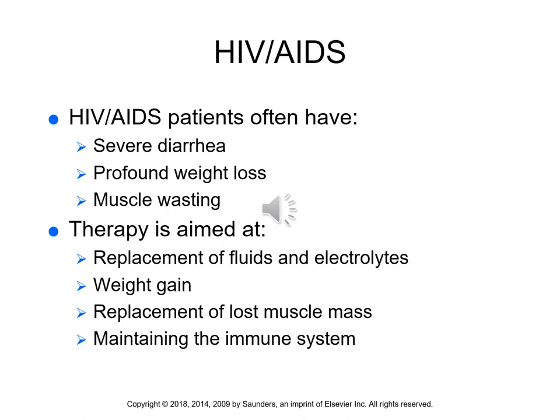HIV patients often experience loss of appetite, nausea, vomiting, severe diarrhea, severe weight loss, and muscle wasting, which can interfere with diet therapy. The goals of dietary therapy include replacement of fluids and electrolytes, weight gain, and replacing lost muscle mass. Research suggests that proper diet therapy may help delay full-blown AIDS. Gastric tube feedings or TPN may also be required.